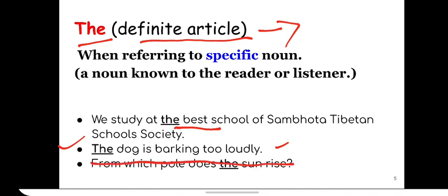Now the is used before specific noun. For example, if I say that in my class there is only one door. So what will I say? I'll say close the door because there is only one door and you know which door I'm talking about. I'm being specific here.